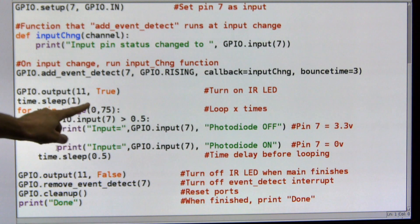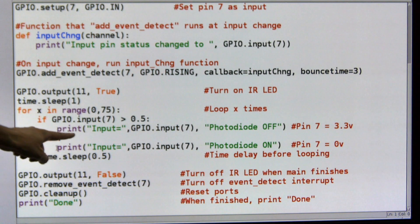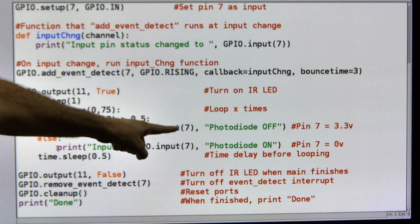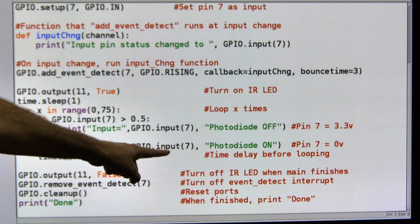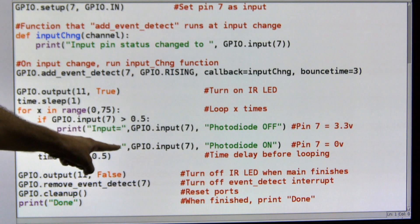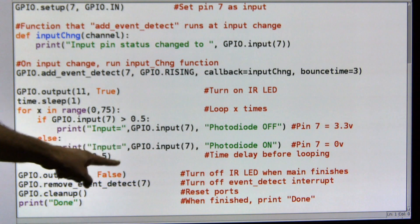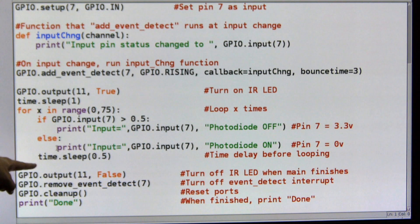And then I loop through this 75 times in this case. I'll probably increase it for our example just to keep it running. But it's going to tell me the status of pin 7. So it's going to tell me whether the photodiode is off or photodiode is on, and that's being detected at pin 7. Now I give it a little bit of sleep time, and then I go back through this loop.